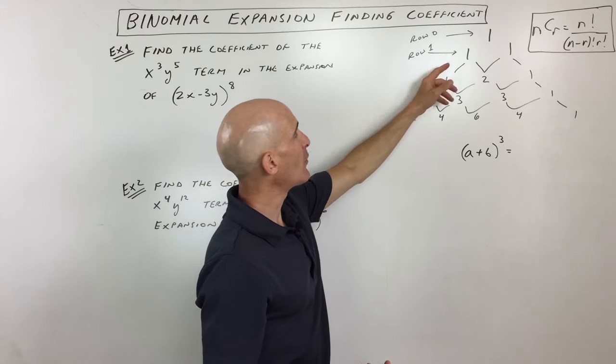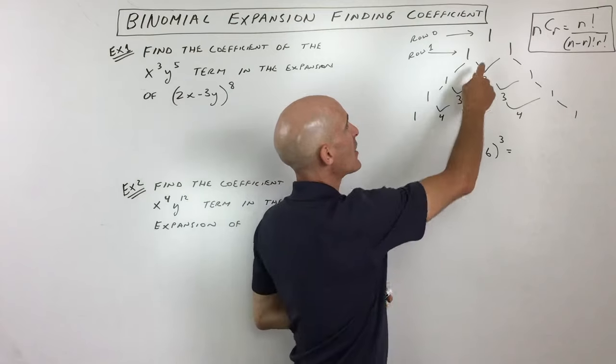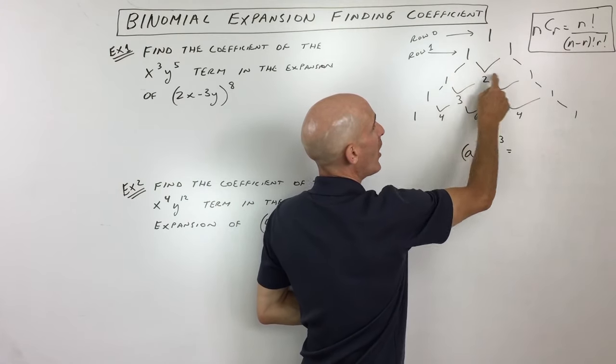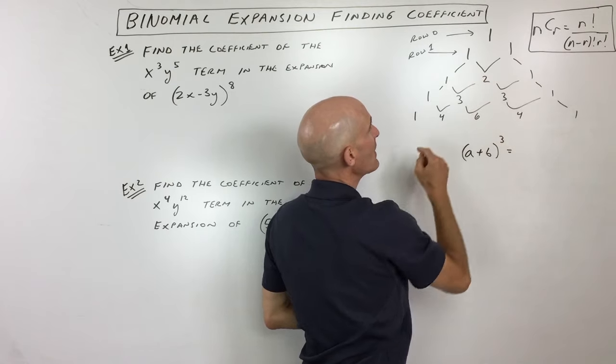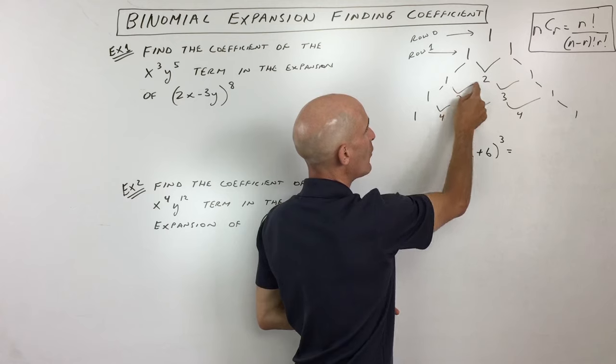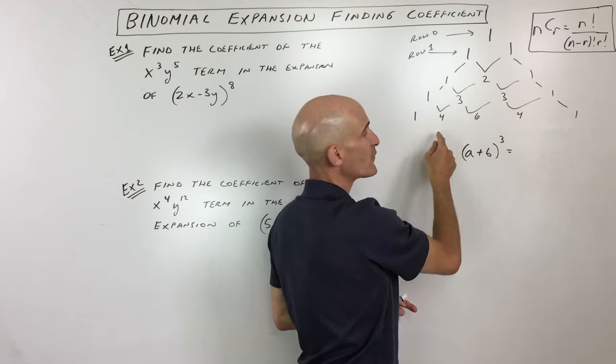So first things first, let's review a couple things. First thing is Pascal's triangle. And you can see with Pascal's triangle that the rows begin with one and they end with one. The rows go like this, and then to get the term below, what you do is you add the two terms above. So see how 1 plus 2 adds up to 3, 2 plus 1 adds up to 3, or 1 and 3 adds up to 4.